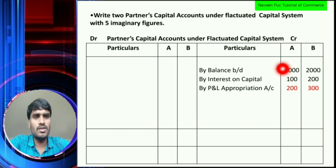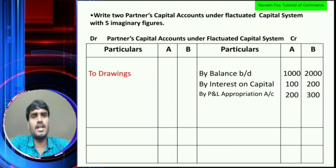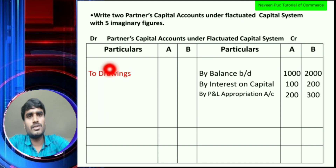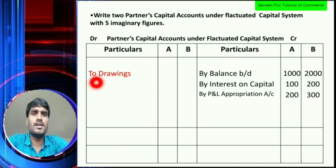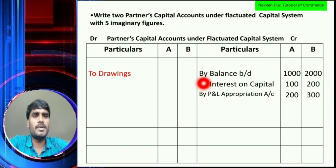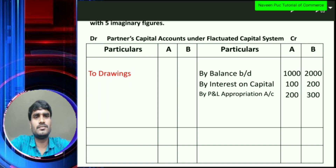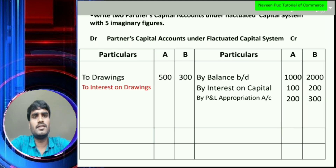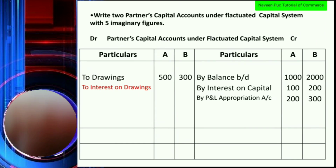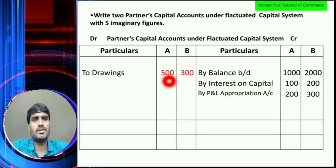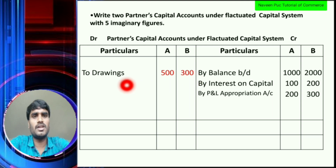So three accounts, three imagination figures so far. Now let's move to the debit side. On the debit side: two drawings. Drawings — Partner A: Rs. 500, Partner B: Rs. 300.